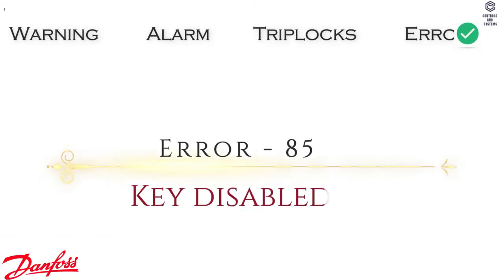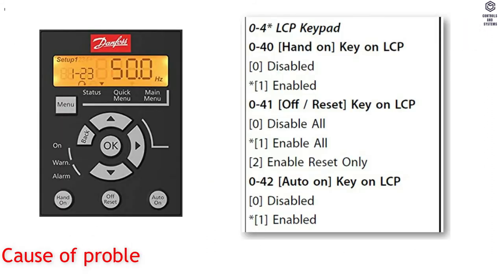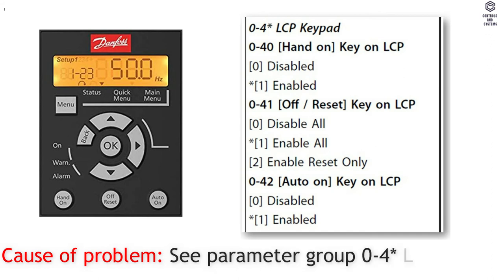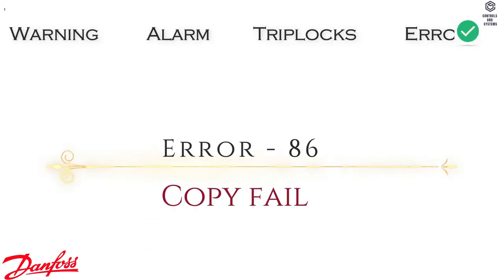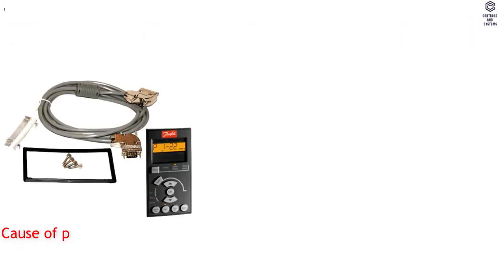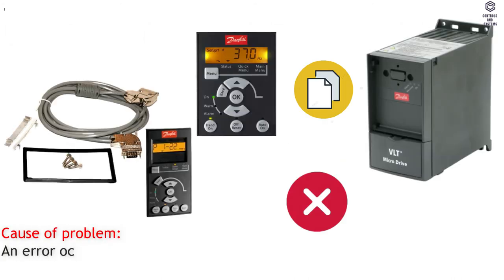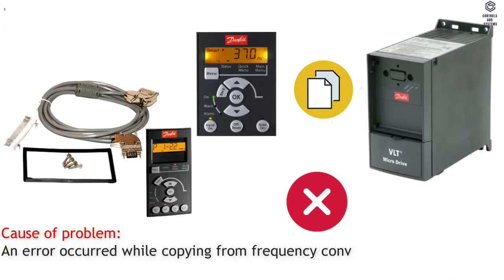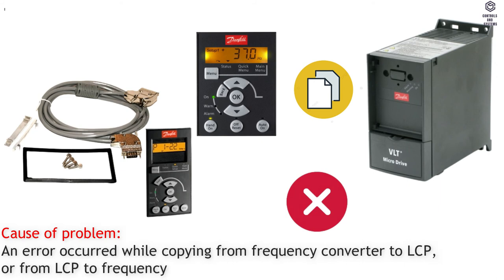Error 85: Key Disabled. Cause of Problem — see Parameter Group 04 LCP. Error 86: Copy Fail. Cause of Problem — an error occurred while copying from frequency converter to LCP, or from LCP to frequency converter.